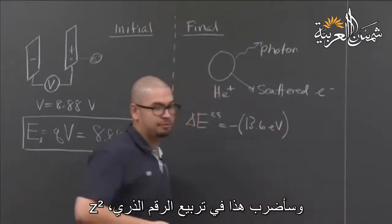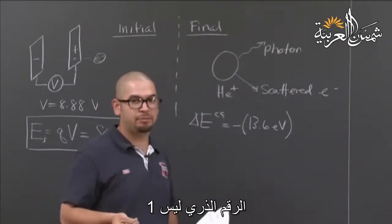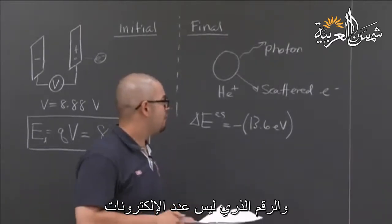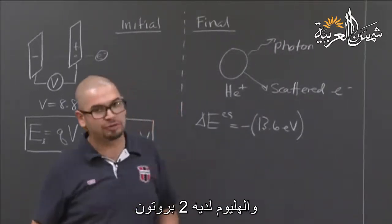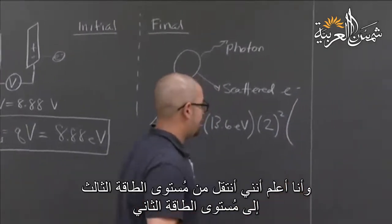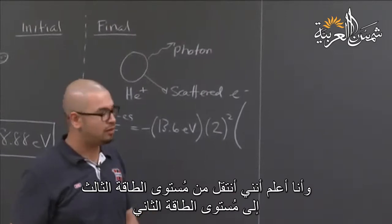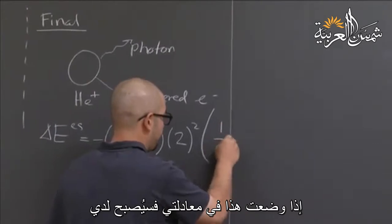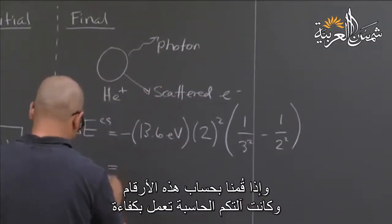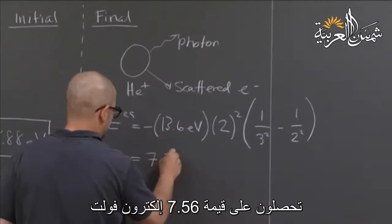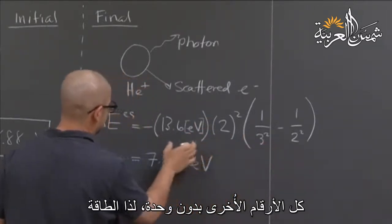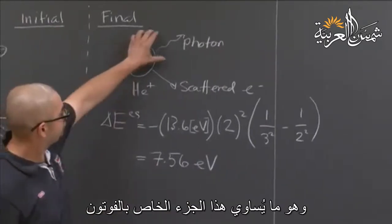I multiply by the atomic number squared. This is where people make mistakes on the exam: the atomic number is not one — it's actually two, because we're talking about helium. The atomic number is not the number of electrons or the ion value, but the number of protons. Helium has two protons, so I multiply by two squared. Going from N equals 3 to N equals 2, I have one over three squared minus one over two squared, which is ninths and fourths. Plugging this in gives a value of 7.56 electron volts for the transition energy, which covers the photon part.